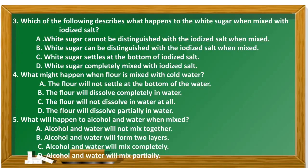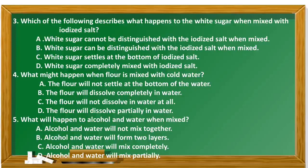Number 5. What will happen to alcohol and water when mixed? A. Alcohol and water will not mix together. B. Alcohol and water will form two layers. C. Alcohol and water will mix completely. D. Alcohol and water will mix partially. The correct answer is Letter C.